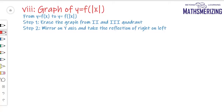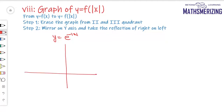I'll take a very simple example. I need to draw the graph of y = e^(-|x|). I'll start with drawing the graph of e^(-x), which is a decreasing function. For this transformation, there are two steps.